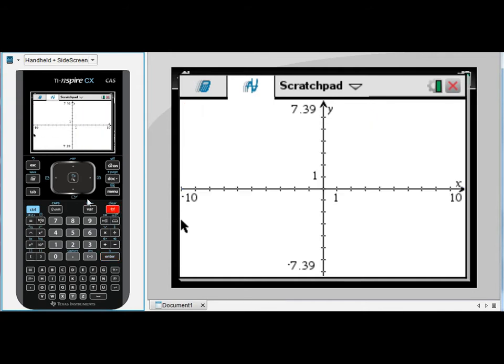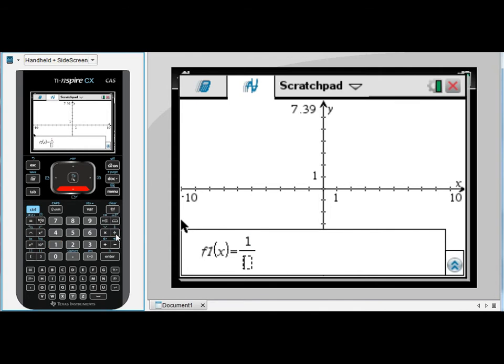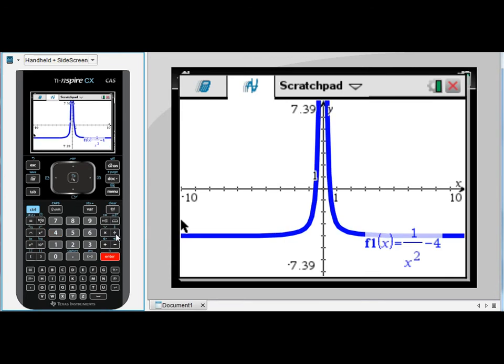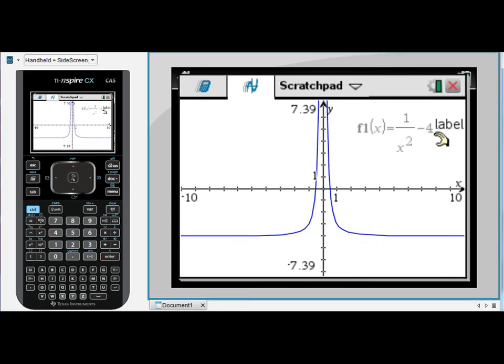Let's look at one more function. Delete three times again. Tab to open my entry line. I want to enter a fraction, so control divide, 1 over x squared minus 4. This time we have a truncus. This also has two asymptotes, a vertical one and a horizontal one. Again it requires my understanding of the function to identify where those asymptotes are.